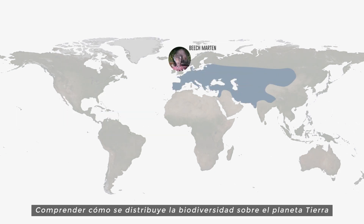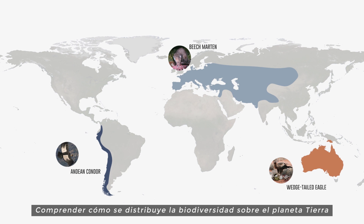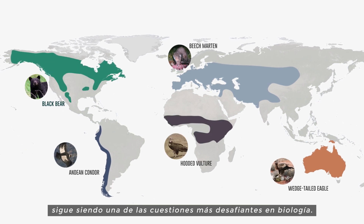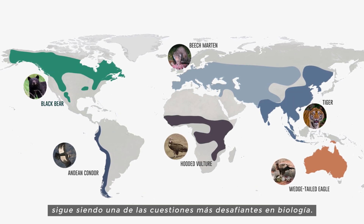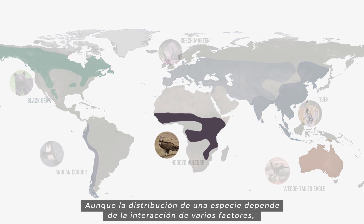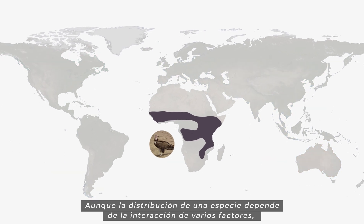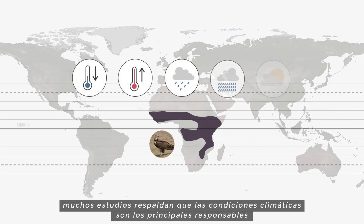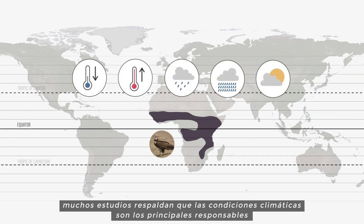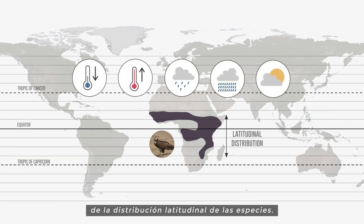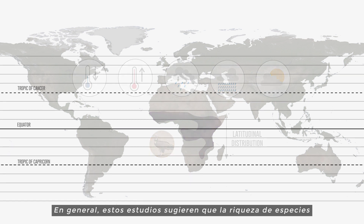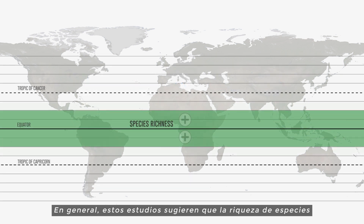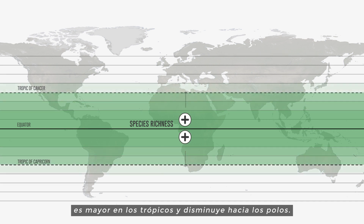Understanding the distribution of biodiversity across planet Earth is still one of the most challenging biological questions. Although the distribution of a species depends on several interacting factors, many studies support that climatic conditions are the main drivers of the latitudinal distribution of species. Overall, these studies suggest that species richness is greater in the tropics and decreases toward the poles.